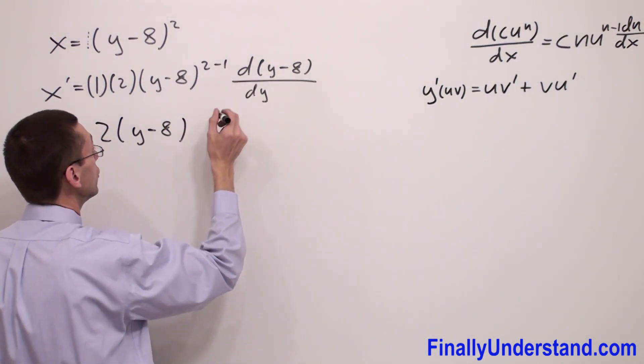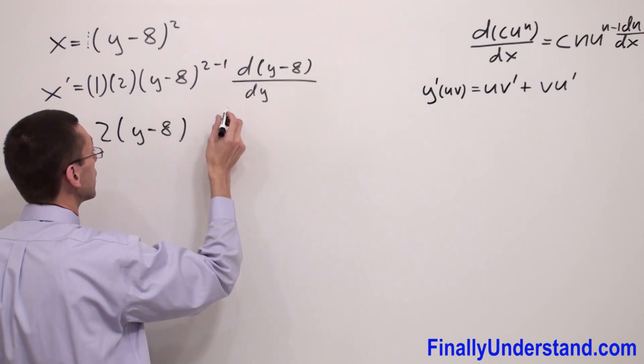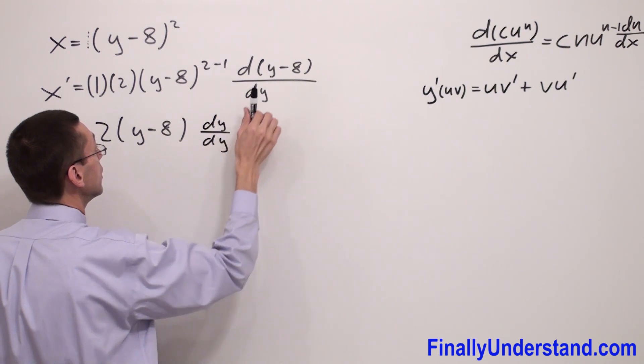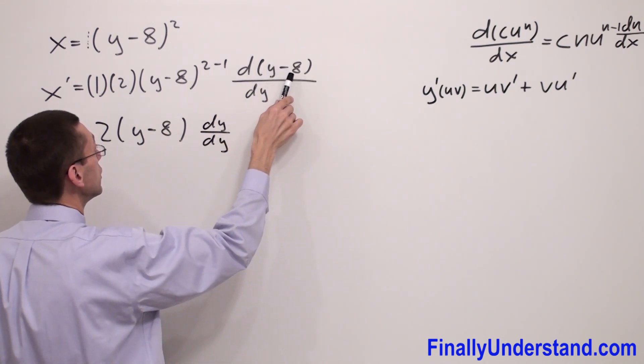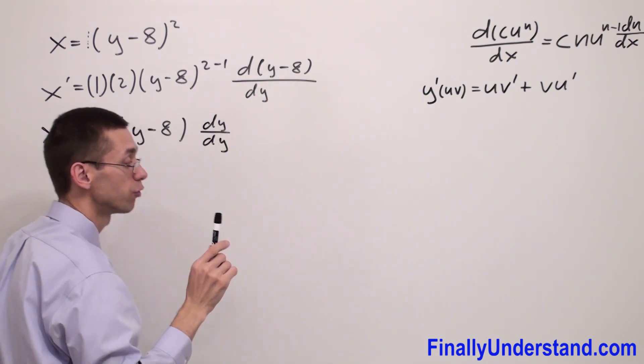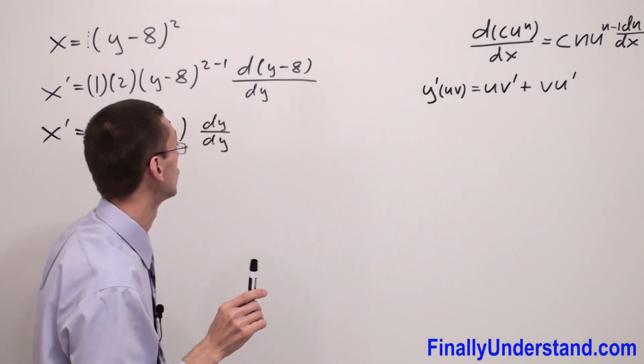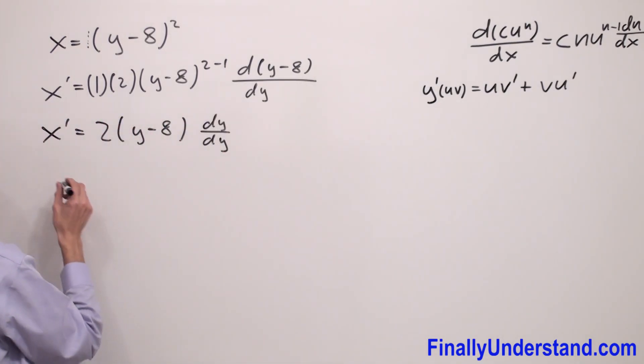And I have derivative of y over dy minus derivative of 8 over dy. Don't forget that derivative of a constant is equal to 0. That's why I'm not going to write anything over here.